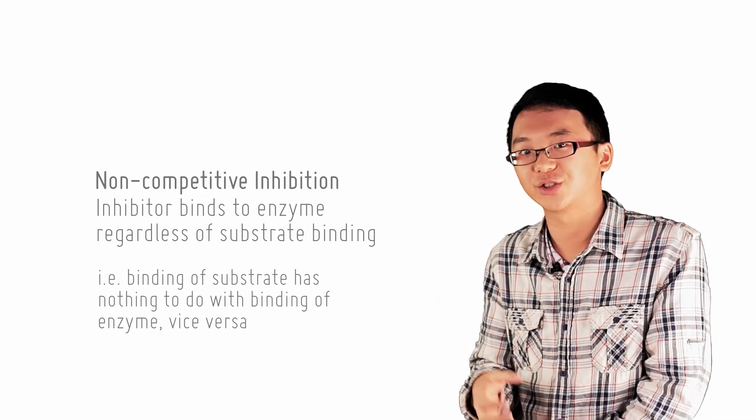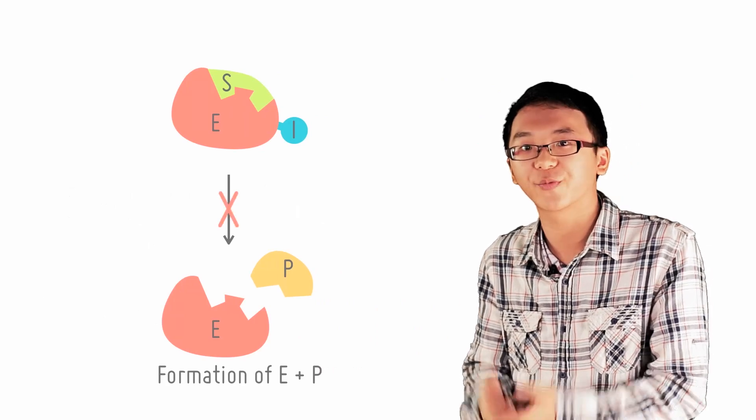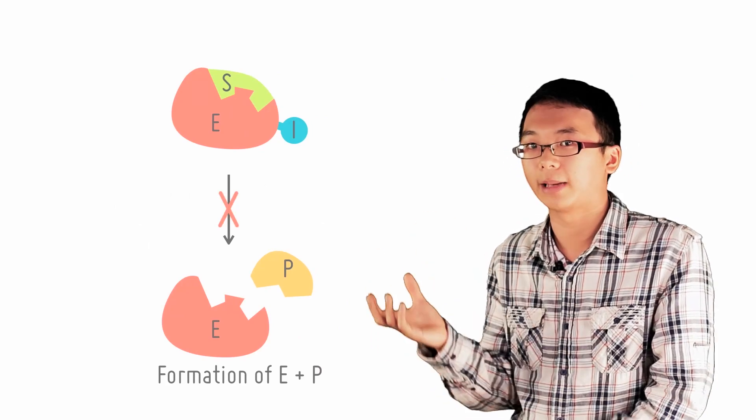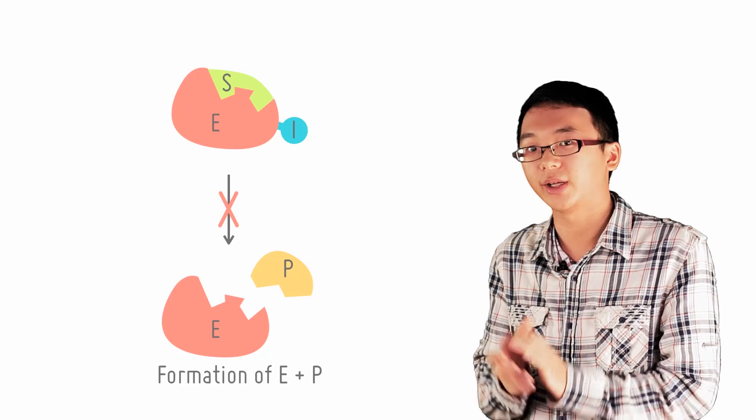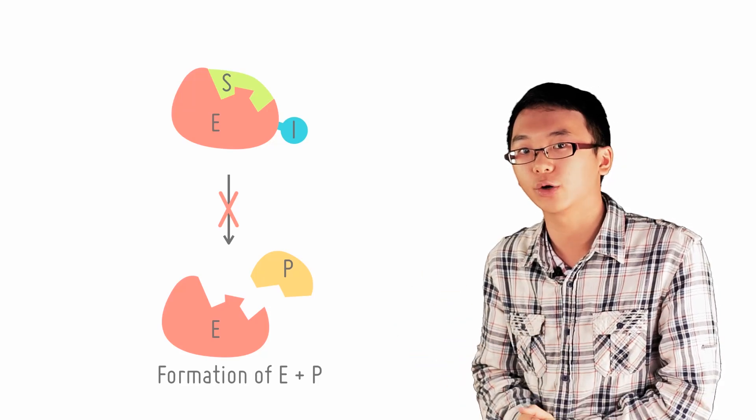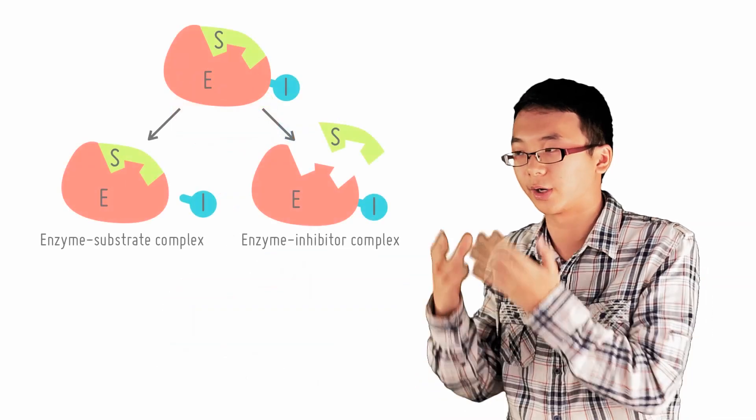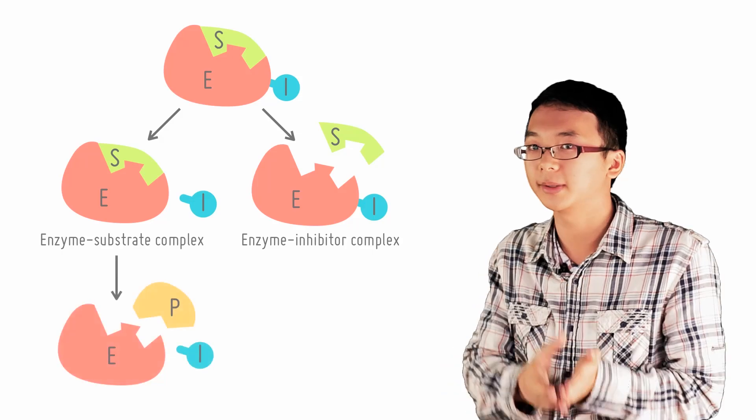Well, with the inhibitor attached to the enzyme, the enzyme-substrate-inhibitor complex is prevented from being converted into enzyme and products. The enzyme-substrate-inhibitor complex can only go back to form the enzyme-substrate complex or the enzyme-inhibitor complex.